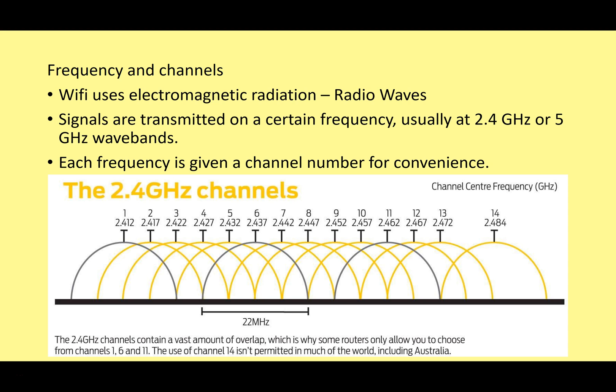We often like to use channels 1, 6, and 11 because you'll notice there's a lot of overlap between other channels. Channel 2, for example, overlaps with channels 1, 3, and 4, which can cause interference. Channels 1, 6, and 11 don't interfere with each other, so many routers are automatically set to those frequencies. Modern routers can also scan through channels and choose the one with the least interference automatically.